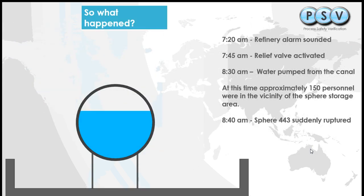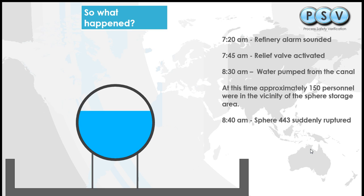So what actually happened? The initial sampling was at 6 o'clock — they went out to the tank at about 6am and had their leak. The initial fire didn't start until approximately 7:20am. That's when the refinery alarm sounded and there were firefighting efforts to try and put the fire out.